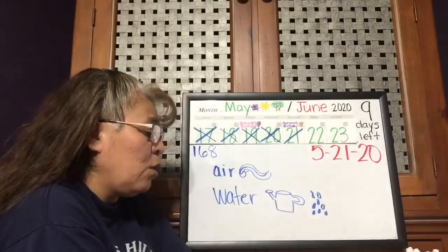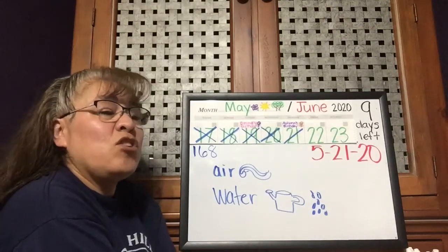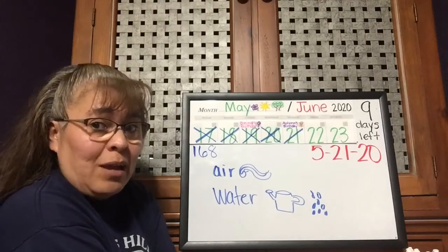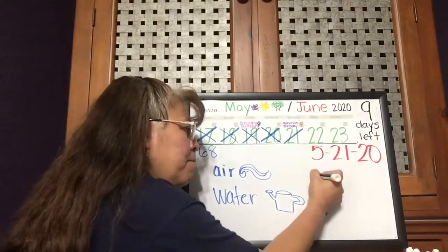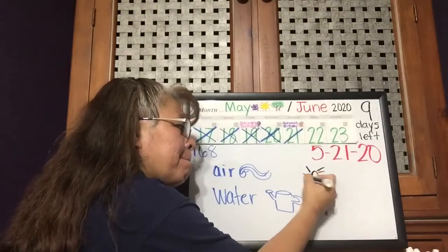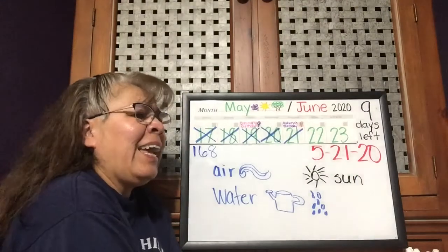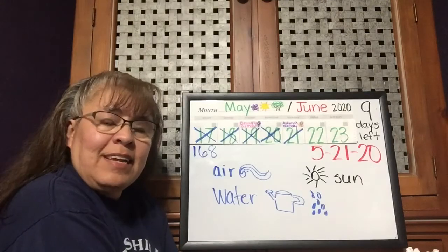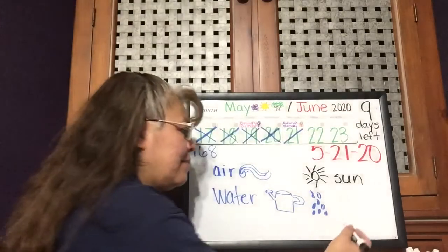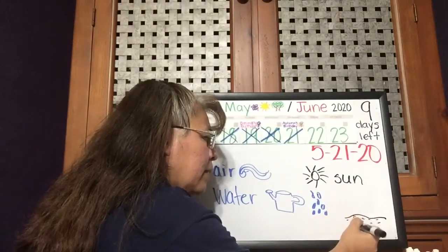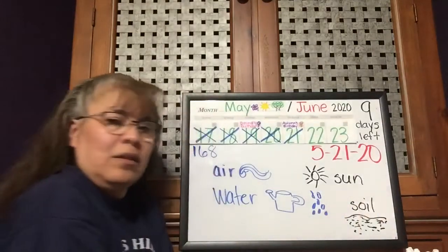Do plants need food? Well yes, they do, but they don't eat food like we do — they make their own food. And what they need to make their food is the sun. They need the sun to help them make their food. And there's also one more thing plants need to help them grow and stay in place — soil or dirt.